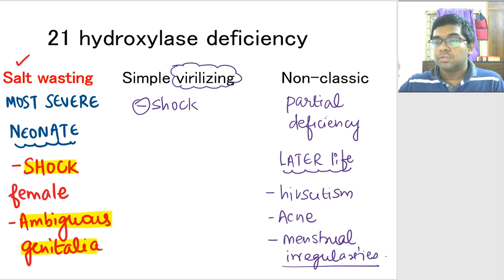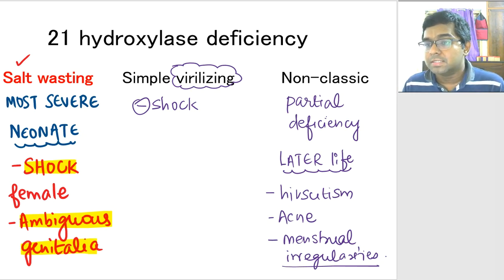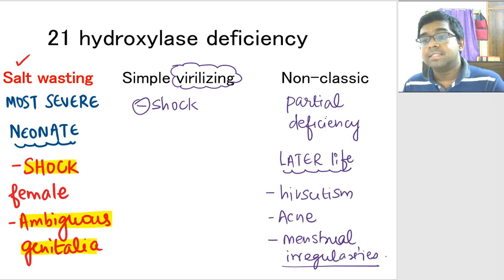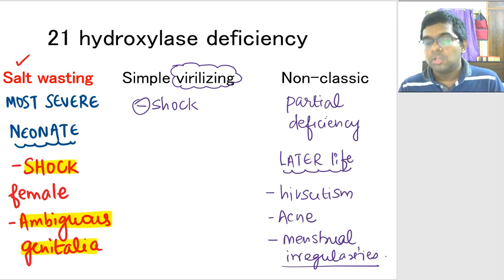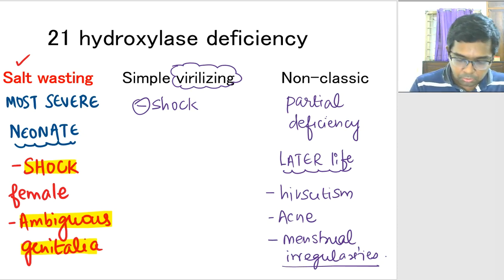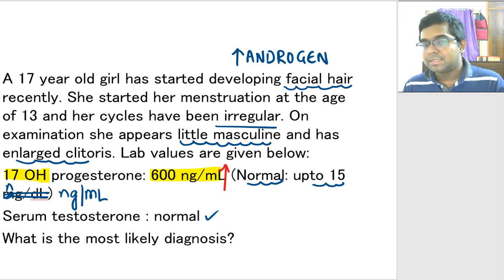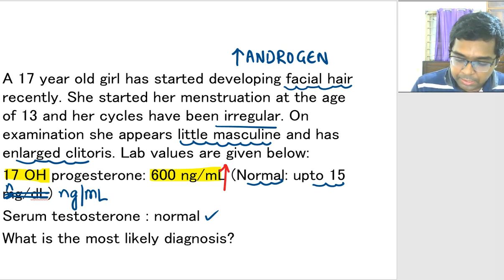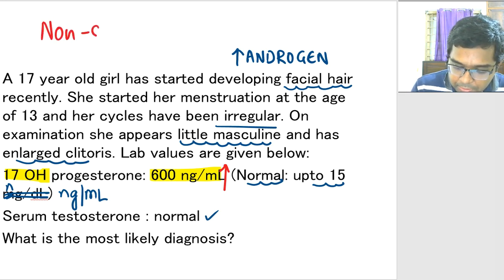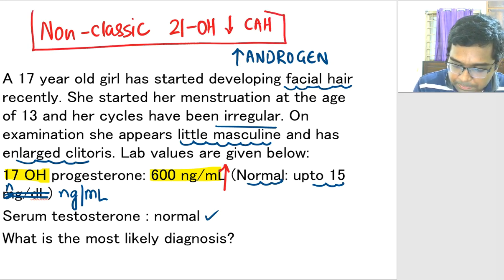A very important differential diagnosis to remember: whenever you see an adolescent girl presenting with acne and menstrual irregularities, one important differential is PCOS — polycystic ovarian syndrome. But please remember, in PCOS, you will not have elevated 17-hydroxyprogesterone. Here, there will be elevated 17-hydroxyprogesterone, and that word should lead you to the diagnosis of 21-hydroxylase deficiency. Going back to the question, it is a late presentation — a 17-year-old girl with evidence of increased androgen and elevated 17-hydroxyprogesterone. The diagnosis is non-classical 21-hydroxylase deficiency CAH.